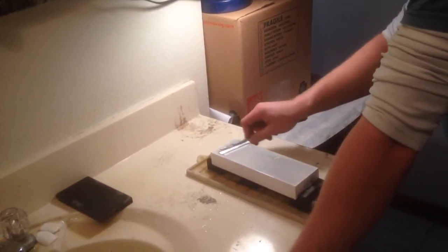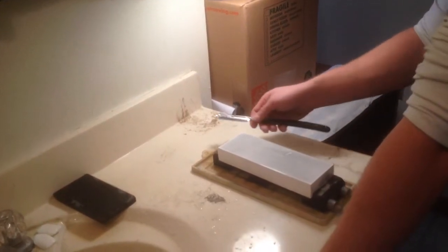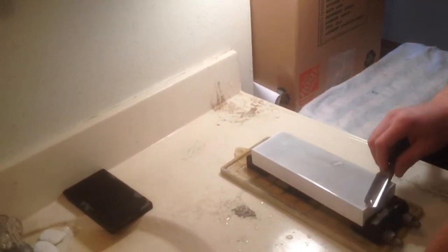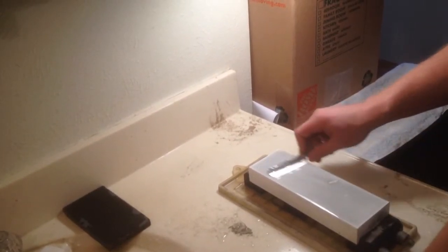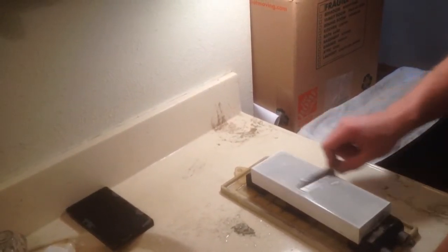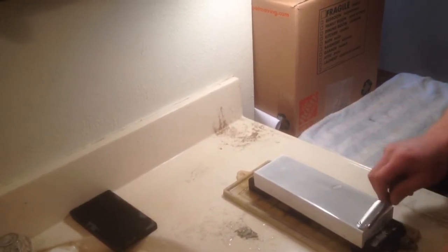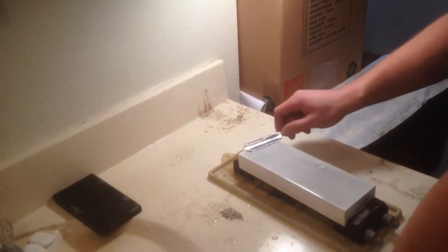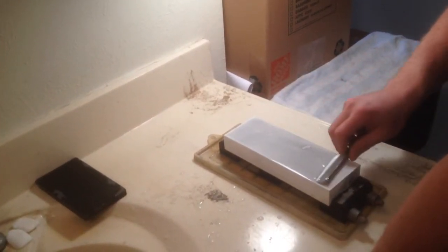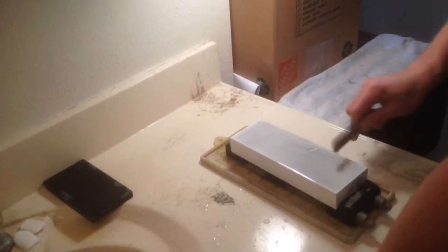So once I know my bevel is set, I'll just kill the edge through the corner of the stone really lightly and what that does is it eliminates microchips and teeth at the edge. Then I bring my edge back and when I can feel that nice stiction I know that the whole edge is in contact with the stone again and it's back.